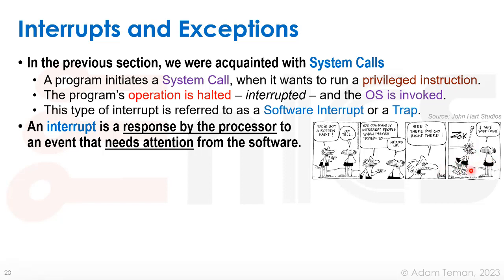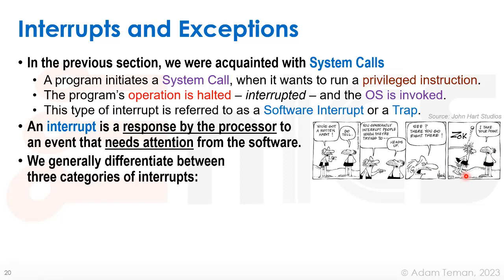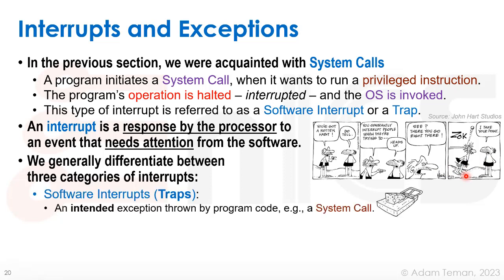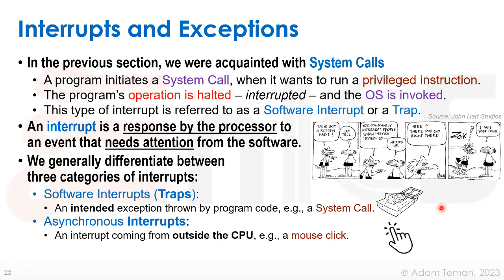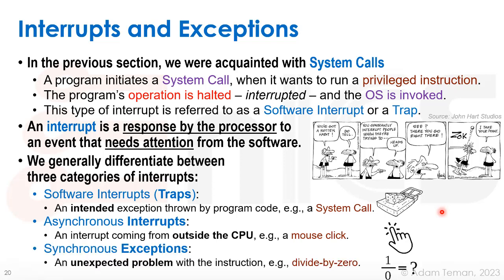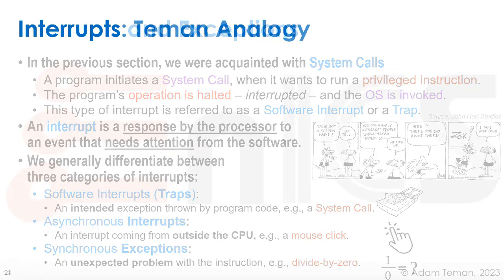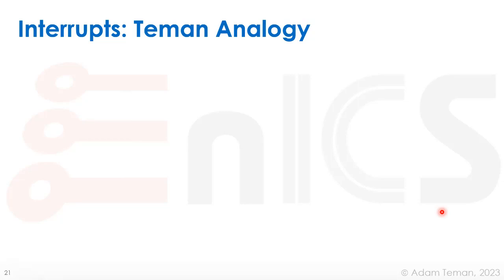We generally differentiate between three categories of interrupt. First, traps or software interrupts occur when an exception is thrown by program code, like a system call — the software interrupts itself. Second, asynchronous interrupts come from outside the CPU, like a mouse click — something asynchronously interrupts what the CPU was doing. Third, synchronous exceptions are unexpected problems with an instruction, such as dividing by zero or executing an illegal instruction, causing the processor to throw an exception.